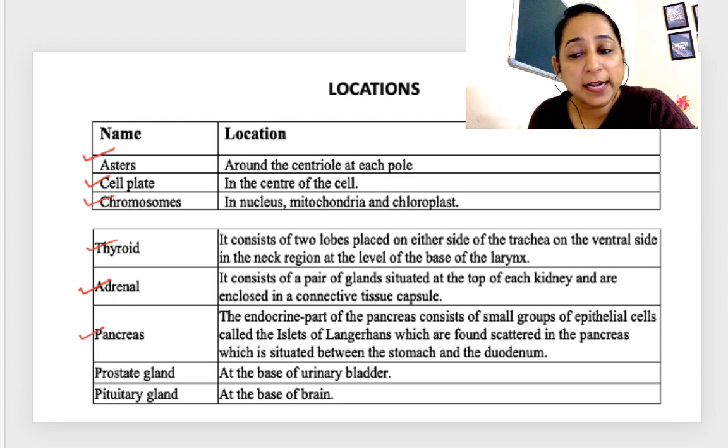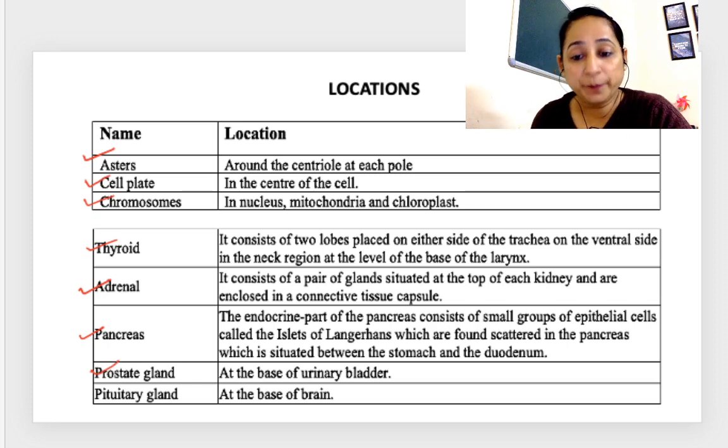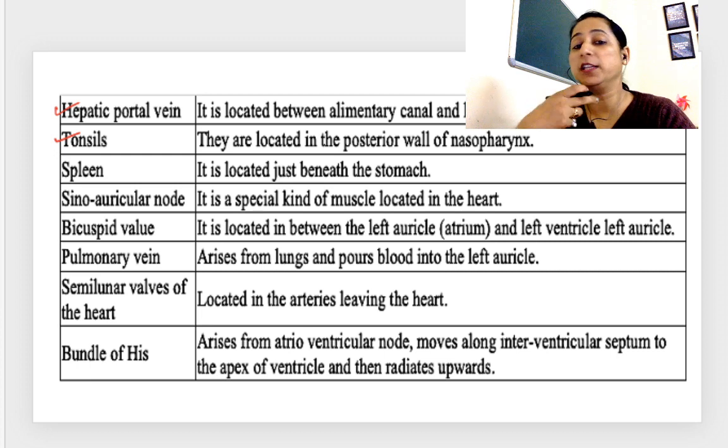Adrenal, it consists of a pair of glands present over or above the kidney. Pancreas, endocrine gland, is situated between stomach and duodenum or you can write just small intestine. Prostate gland, at the base of the urinary bladder. Pituitary gland, at the base of the brain.